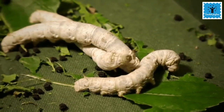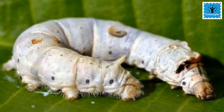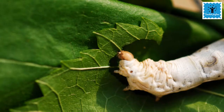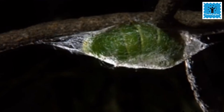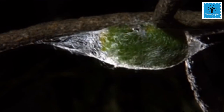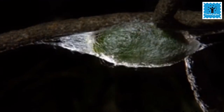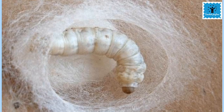Larvae feed on tender mulberry leaves and consume these leaves for the next 20 to 30 days, growing bigger in size. When the caterpillar is ready to enter the next stage of its development, called the pupa stage, it first weaves a net to hold itself and then swings its head from side to side. During these movements, the silkworm secretes fiber made of protein.